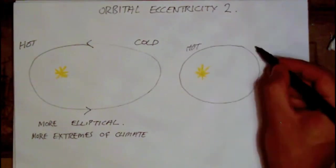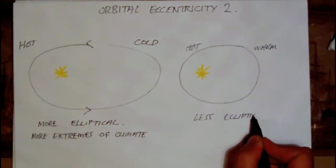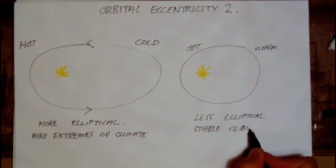Conversely, when the orbit is more circular and less elliptical, a more stable climate exists throughout the year.